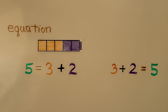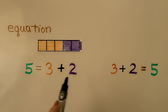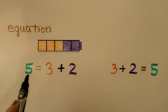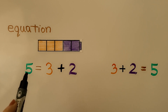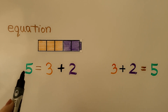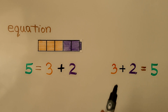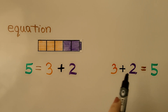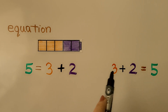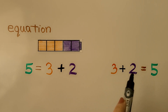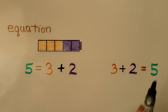This is just a different way to write a number sentence. We can write it with the total in all and then the equal sign, or we can write the number pairs, then an equal sign, and the total in all.